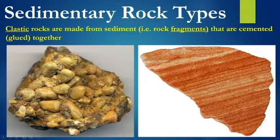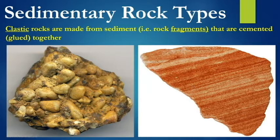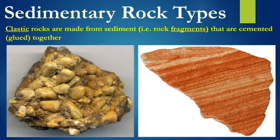The clasts — the sediments — are very obvious. Now in this sandstone here, this layered sandstone, the clasts are not as obvious, but if you look carefully you can see individual grains. If you had a microscope, sliced open the rock and took a look at it, it'd be much easier to see those individual sand grains all glued or cemented together.